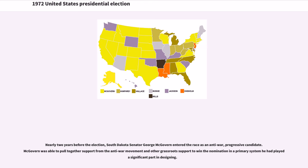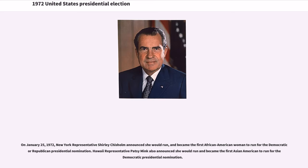Nearly two years before the election, South Dakota Senator George McGovern entered the race as an anti-war, progressive candidate, able to pull together support from the anti-war movement and grassroots support to win the nomination in a primary system he had played a significant part in designing. On January 25, 1972, New York Representative Shirley Chisholm announced she would run, becoming the first African-American to run for the Democratic or Republican presidential nomination. Hawaii Representative Patsy Mink also announced she would run, becoming the first Asian-American to run for the Democratic presidential nomination.